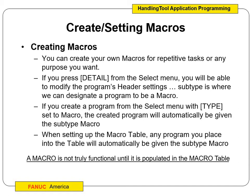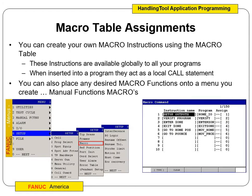Something that's going to happen over and over — like for us, tool one, open and close grippers, those sorts of things. If we press detail on the select menu where your program is, you'll be able to modify the program's header so it makes it a macro. If you create a program from the select menu, under type you're going to set it to macro instead. When you set up the macro table, any program you place in the table will automatically be given the subtype of macro.